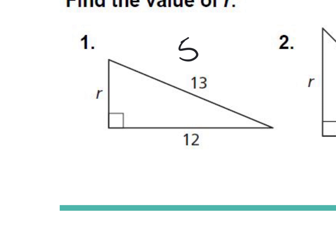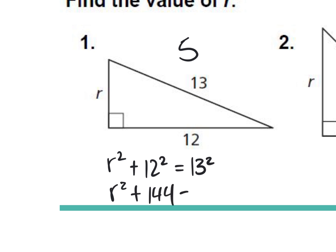So A squared in this case, we're going to make R. So R squared plus 12 squared equals 13 squared. Why did 13 have to be C? Because it's the biggest — and it's also the hypotenuse. Excellent. When we square these, we should get R squared plus 144 equals 169.